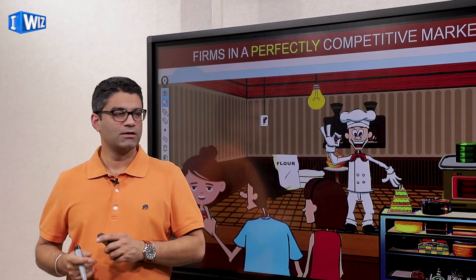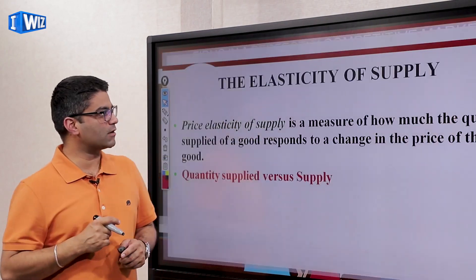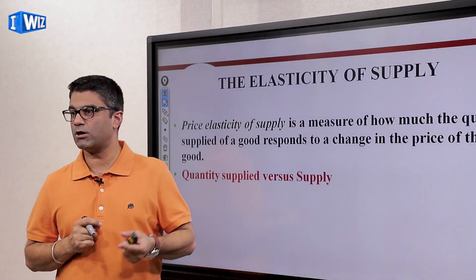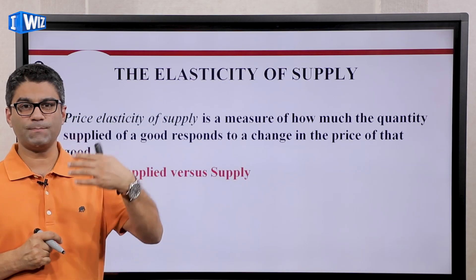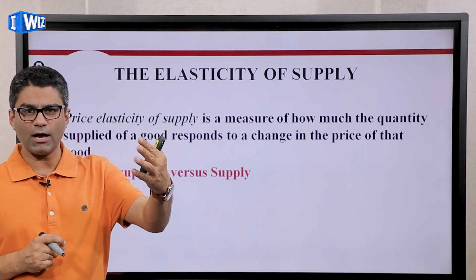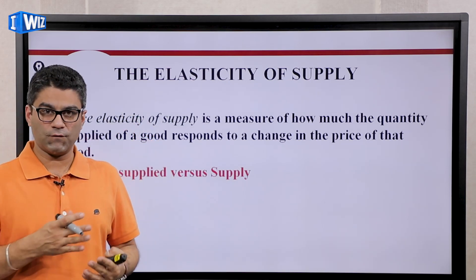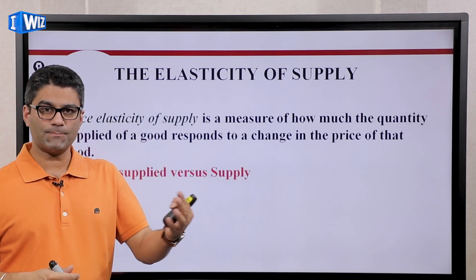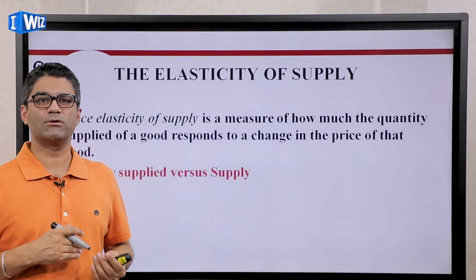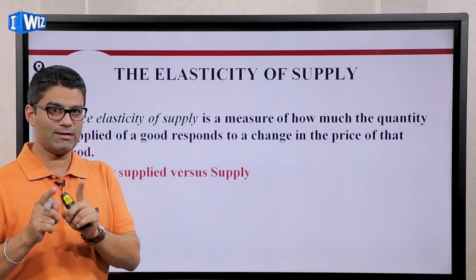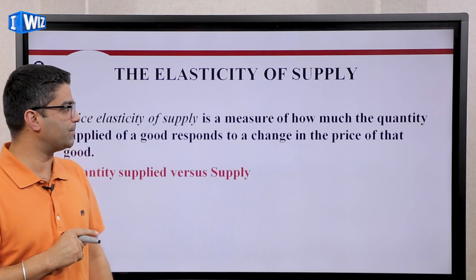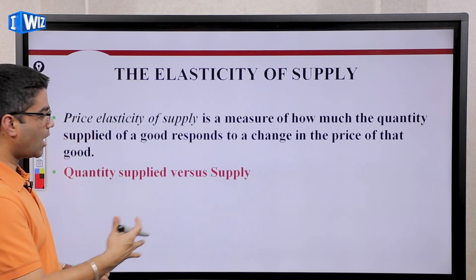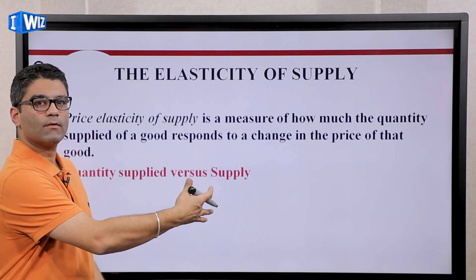In this case, unlike the demand curve, we know that the relationship is going to be positive. As the price of a good goes up, a particular firm is going to produce more goods, and as the price goes down, they'll produce less. So that link you should know from the previous few videos, but now the question is how much more.